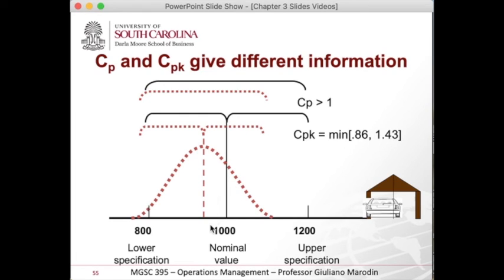What is that telling us? The distance from the mean to three standard deviations on the right is 1.43 — that's good, and the 0.43 is the extra space there. But on the left, the 0.86 is what we're leaving behind. What does that mean to the manager? It means you need to fix this problem by changing the location — adjusting the mean. The variation is okay; you need to adjust the mean.